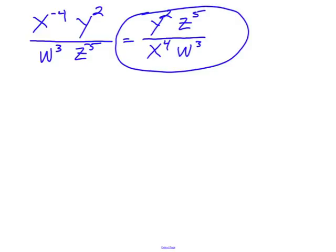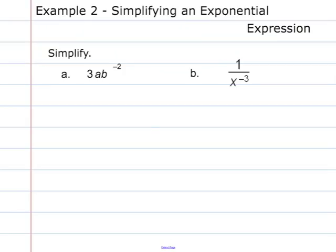Example 2 — simplifying an exponential expression. Part a: 3ab to the negative 2. Imagining this as a fraction over 1, we leave what has positive exponents in the numerator — 3 and a stay in the numerator — and move b to the negative 2 to the denominator, making it b squared. So the result is 3a over b squared.